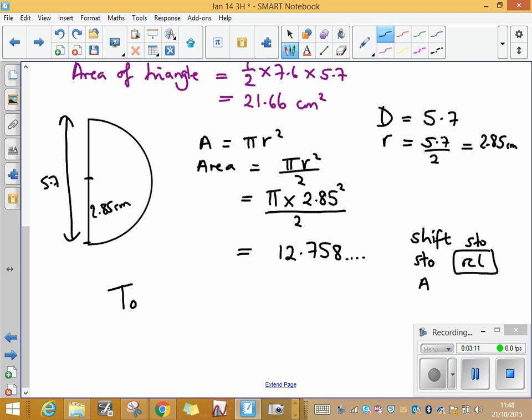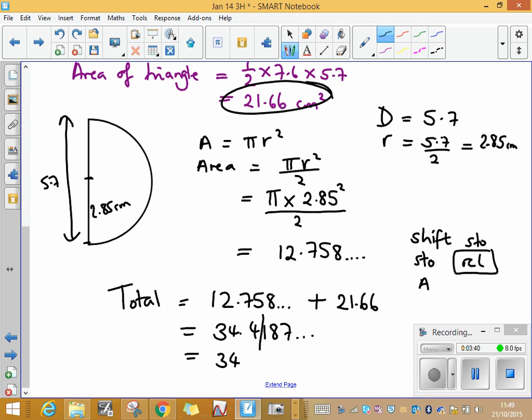So to find the total area now which is what the question asks for, the total is going to be that 12.758 which you've either saved or you've still got it on your screen plus the area of the triangle which was the 21.66. If we add those together it comes out as 34.4187. Always write an accurate answer first and then round it to the required, in this case three significant figures. So I'm going to chop off after the four, no need to round the four, it's just 34.4 centimetres squared to three significant figures.